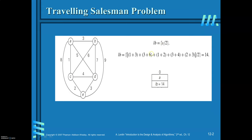Now we will see how to find out the lower bound initially. The tour starts with A. From A, you can reach city B and C with minimum tour length: A to B is 3 and A to C is 1, so the best possible values from A are 1 and 3. Similarly, from B: 3 and 6; from C: 1 and 2; from D: 3 and 4; from E: 2 and 3. The total is 28, divided by 2 is 14. This is the lower bound — the least possible tour length for this given instance of the problem.